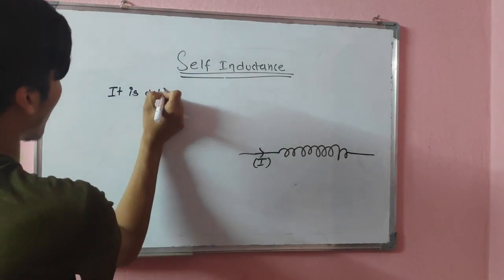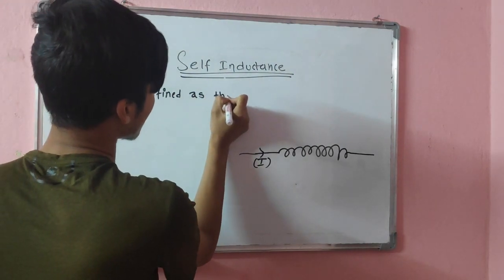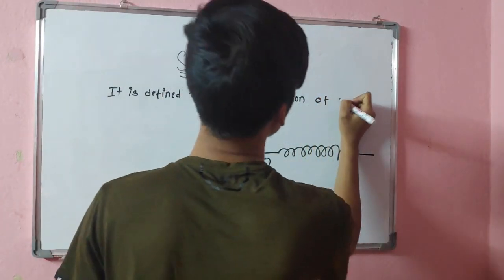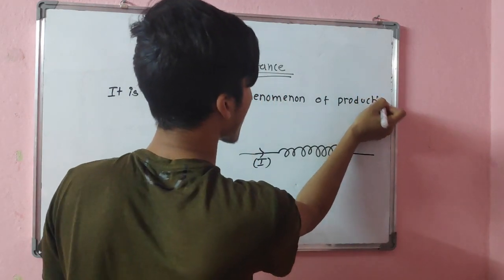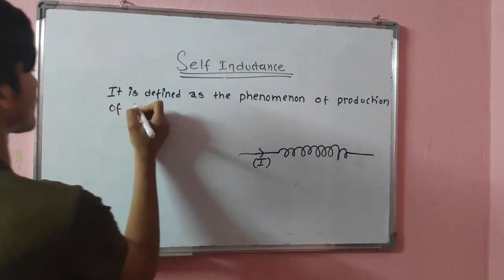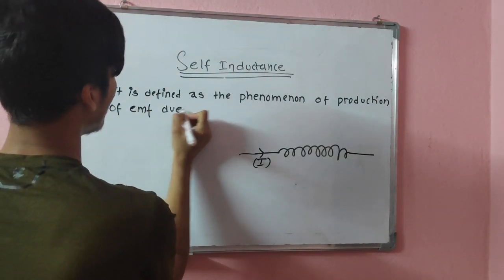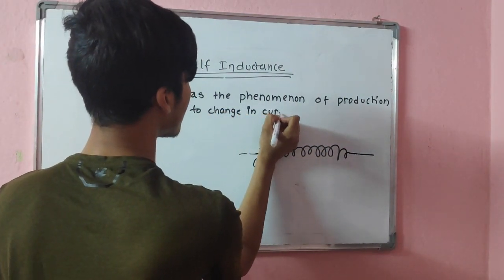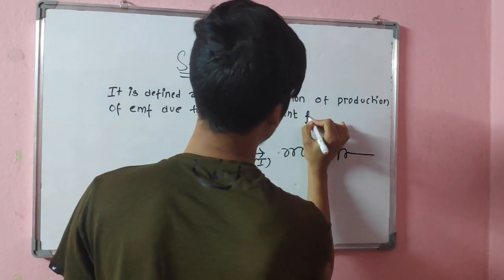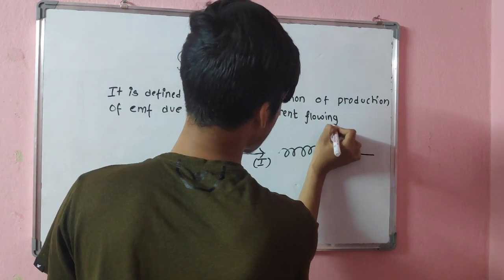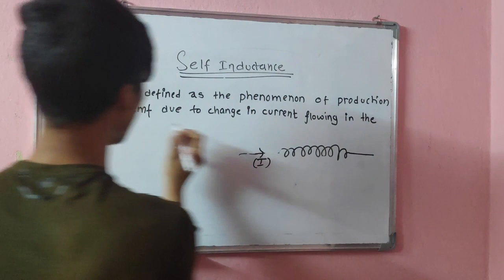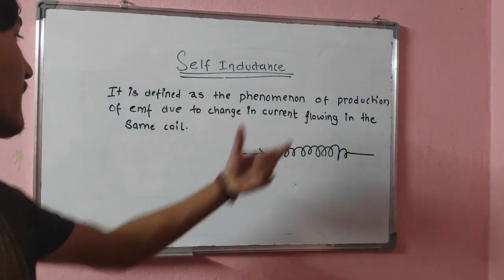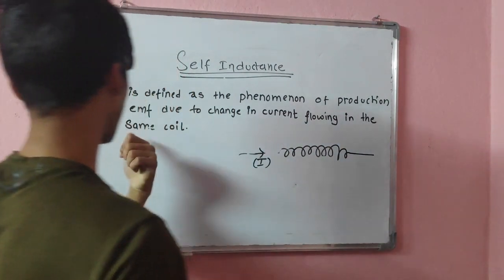Self-inductance is defined as the phenomenon of production of EMF due to the change in the current flowing in the same coil. This is the phenomenon of production of EMF due to change in the current flowing in the same coil.